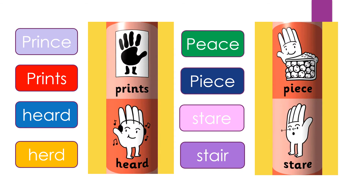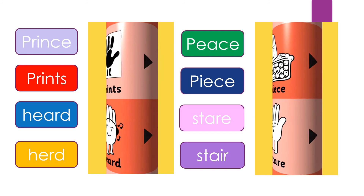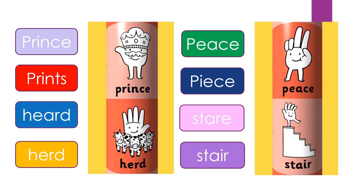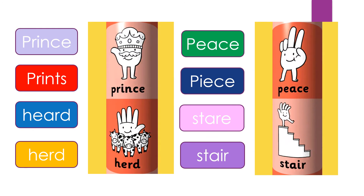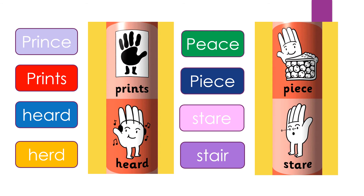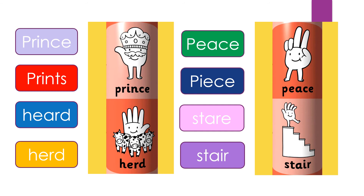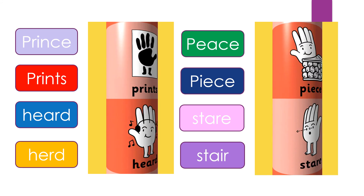Prince, P-R-I-N-C-E, means Rajkumar. Prints, P-R-I-N-T-S, means chapai or chapa. Next word: Heard, H-E-A-R-D, means sunna. The other word Herd, H-E-R-D, means jhund. Peace, P-E-A-C-E, means shanti. Piece, P-I-E-C-E, means tukde. Stare, S-T-A-R-E, means dekhna. Stair, S-T-A-I-R, means seedhi or stairs.